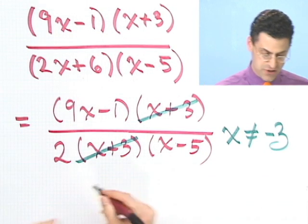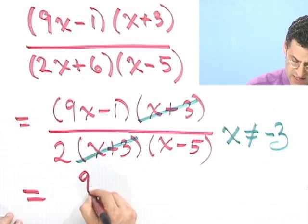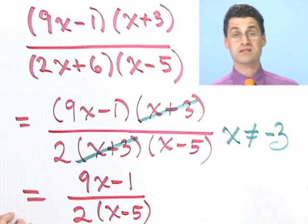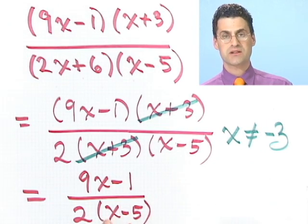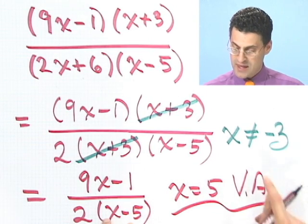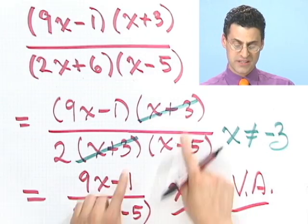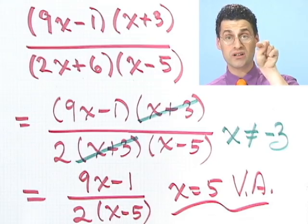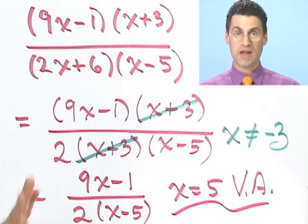But then in that case, this function just becomes 9x minus 1 divided by 2 times x minus 5. And where's the vertical asymptote now? Just that x equals 5. So x equals 5 is the vertical asymptote. And what happens at negative 3? Well since both the top and the bottom canceled, all we're going to have is this function with a little hole drilled out at negative 3. So vertical asymptotes, the basic thing is, just look where the bottom is equal to zero, but make sure the top is not zero there as well. If it is, factor away, see what's left, and then you'll have your answer.